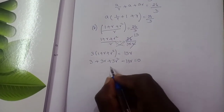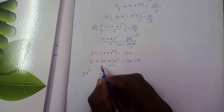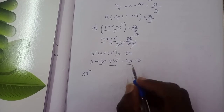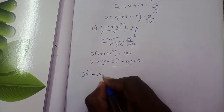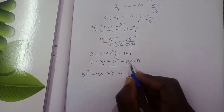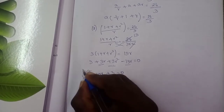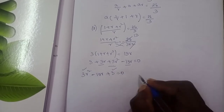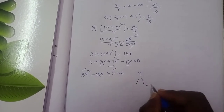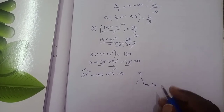Solving 3r² - 10r + 3 = 0: factoring gives (3r - 1)(r - 3) = 0, so r = 3 or r = 1/3.